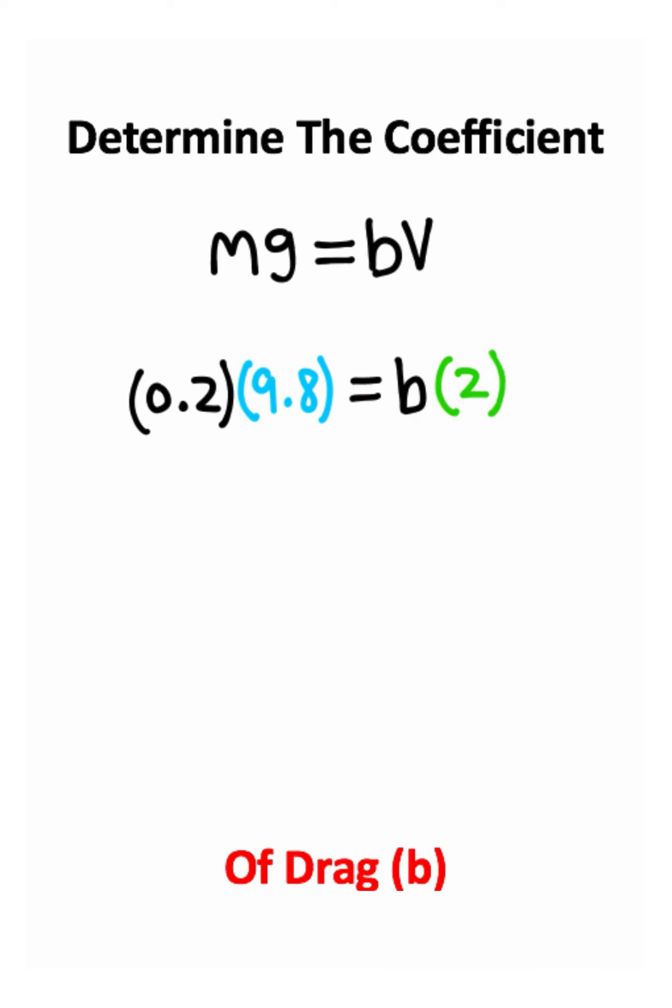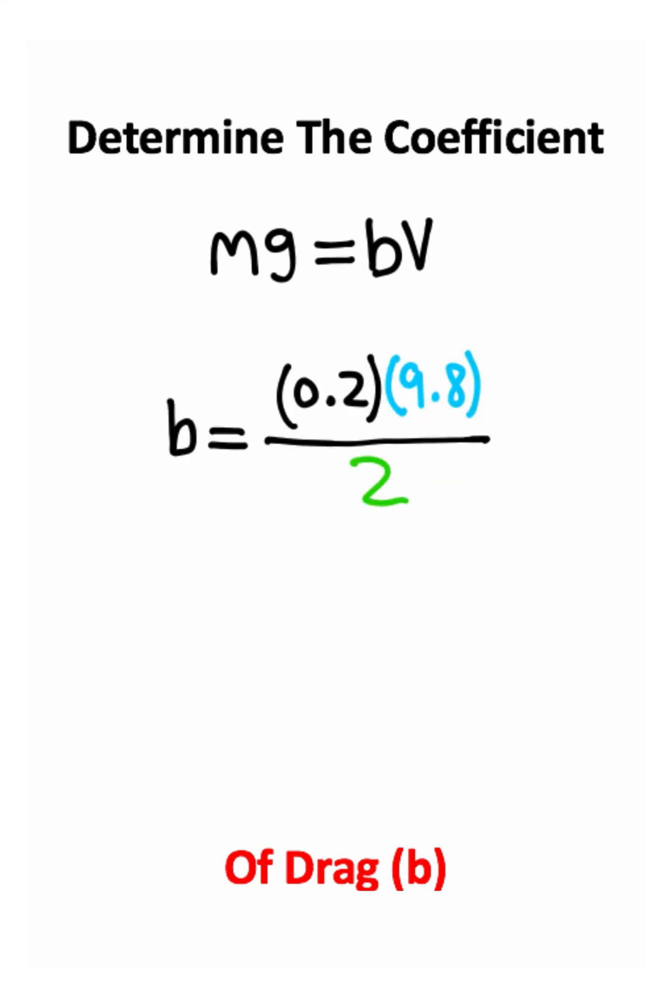So the way we can solve for b is by taking 2 and dividing it on both sides, that'll get the 2s to cancel on the right. And 0.2 times 9.8 divided by 2 is equal to 0.98 newton seconds per meter.